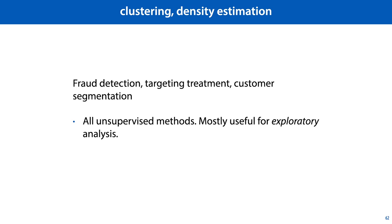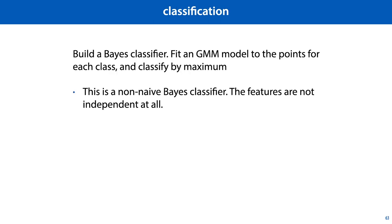These are all unsupervised methods, and indeed fitting a density estimation model to our data is an unsupervised method. But we can also take the Gaussian mixture model and use it to build a classifier, specifically a Bayes classifier. We simply partition our data by class, and fit a Gaussian mixture model to each of our classes, and then classify by which gets the maximal density. Note that this is a non-naive Bayes classifier, because the features are not conditionally independent on the class.